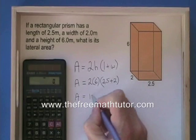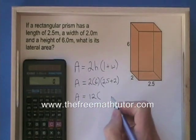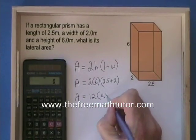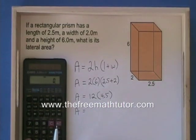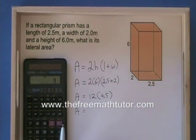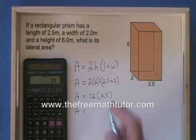2 times 6 is 12, and 2.5 plus 2 is 4.5. 12 times 4.5 is 54.